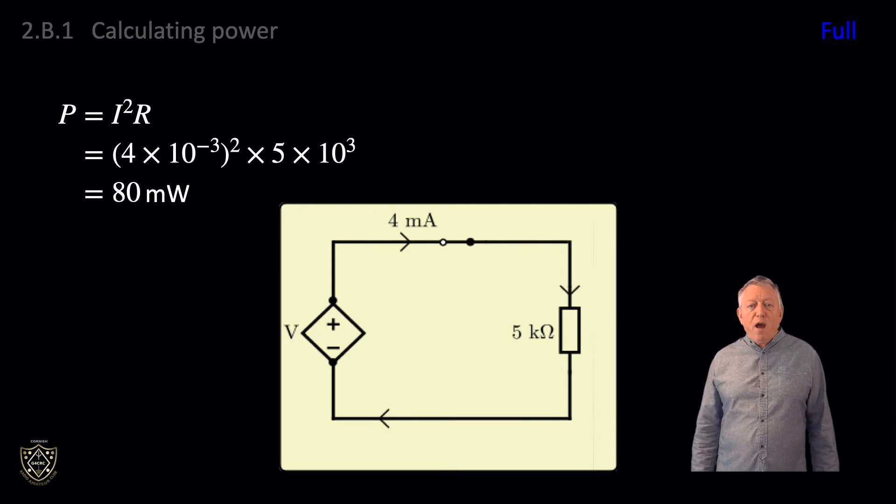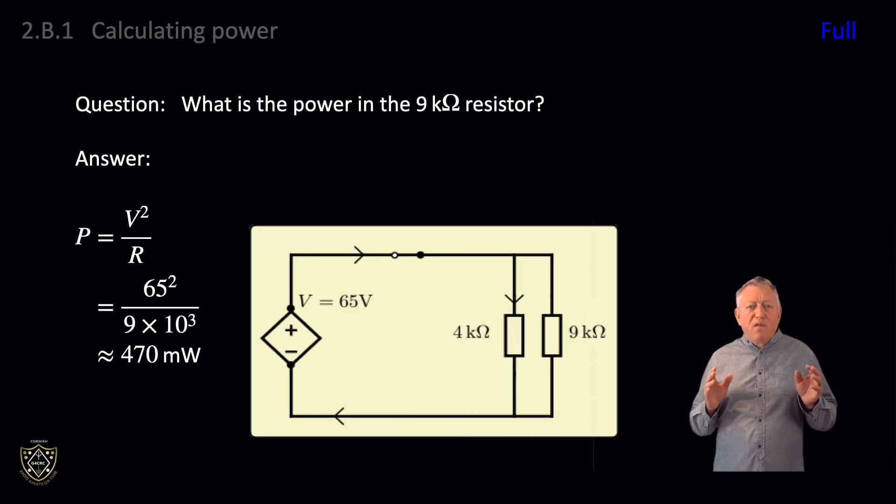Similarly, if we are presented with a problem like the next question where we are given the voltage across the resistor but not the current through it, we can use P equals V squared divided by R. Notice that we don't need to work out the equivalent resistance of the two parallel resistors. Let's do the question: What is the power in the 9 kilohm resistor? Well, P equals V squared divided by R equals 65 squared divided by 9 times 10 to the 3, or approximately equal to 470 milliwatts, just less than half a watt.